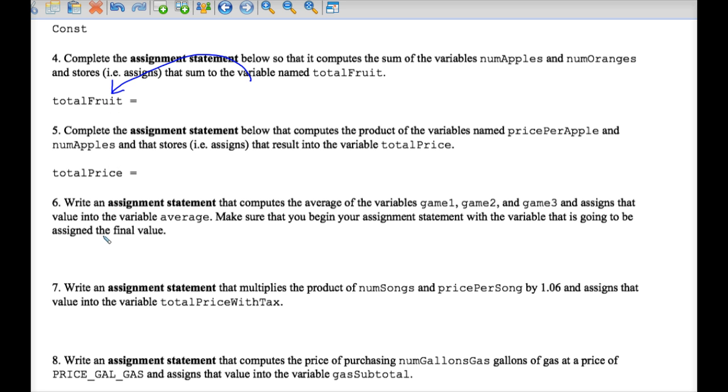In number five, it's totalPrice. You can figure it out for yourself on numbers six and seven. Just read the exercise and figure out what the final variable that has a number assigned into it.